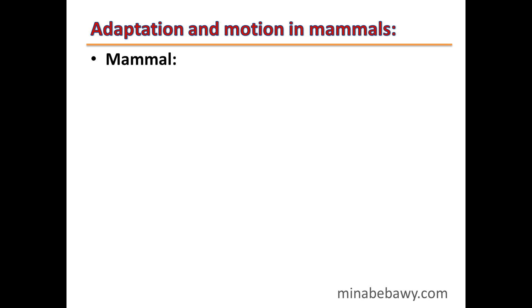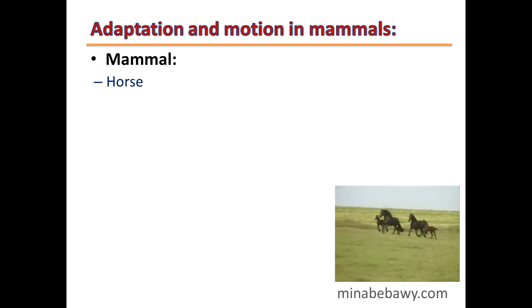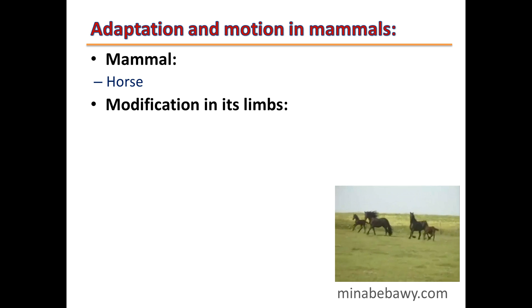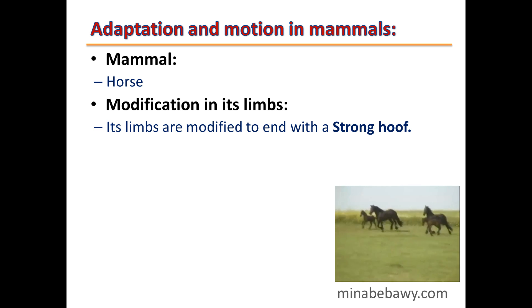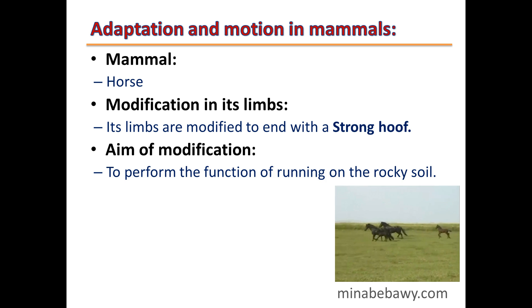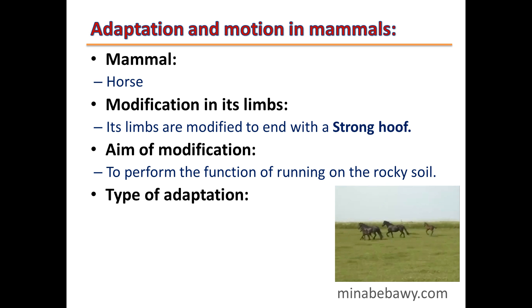Example 3: Horse. Its limbs are modified to end with a strong hoof. The aim of this modification is to perform the function of running on rocky soil. Type of adaptation: Structural adaptation.